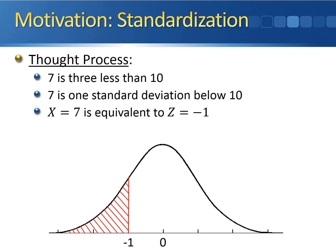Since Z-scores are literally a measure of the number of standard deviations that an observation is away from the mean, what this means is that an invoice being paid in seven days means the invoice is getting paid one standard deviation faster than the mean.